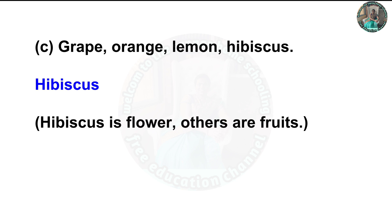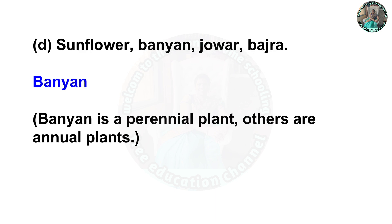C — grape, orange, lemon, hibiscus. The odd one out is hibiscus. Reason: hibiscus is a flower; others are fruits. D — sunflower, banyan, chowar, pachra. The odd one out is banyan. Reason: banyan is a perennial plant; others are annual plants.